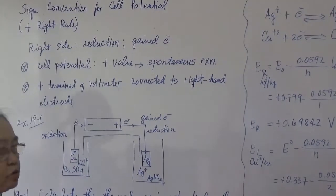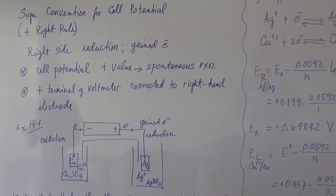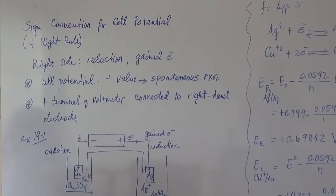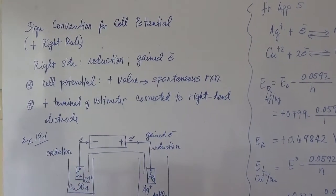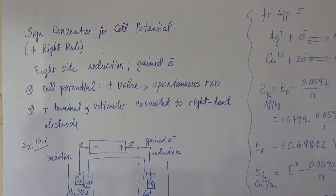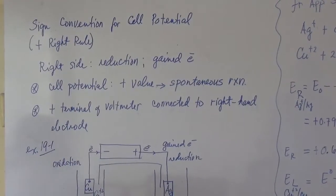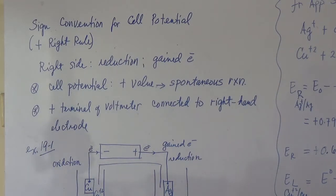Before you proceed to solving a problem, we have first a short review on the cell potential. In a half reaction, you can determine the electrode potential. By definition, when we talk of electrode potential, it would mean reduction potential. Take note, it's a reduction potential. So if you're going to look at the reaction, there will be a reduction of the oxidation number.